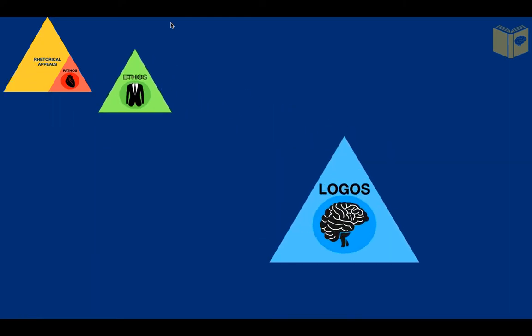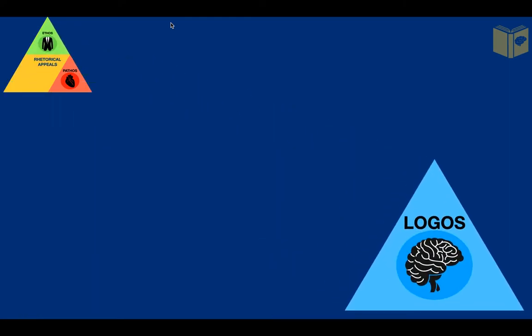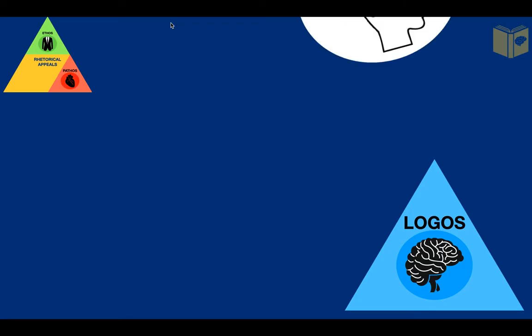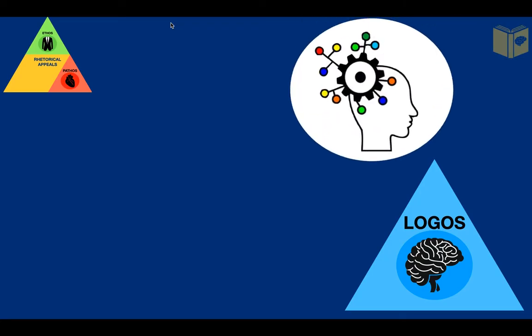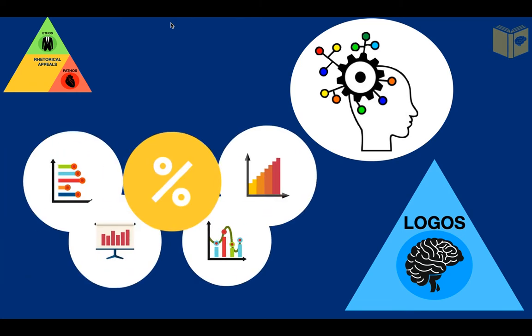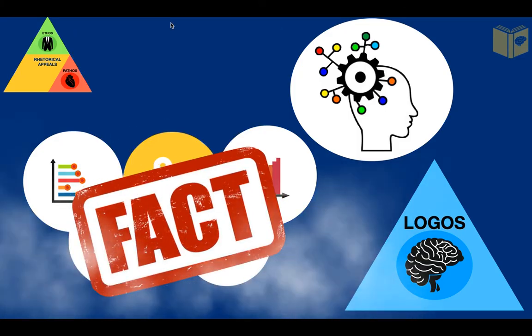The next is logos. The purpose of logos is to appeal to logic and rationality. Its goal is to convince an audience that what you're saying is true and cannot be denied. You can do this by presenting statistics, graphs and tables, examples, and of course facts.